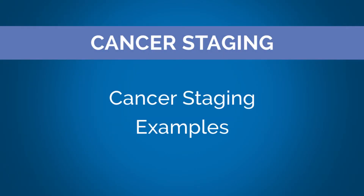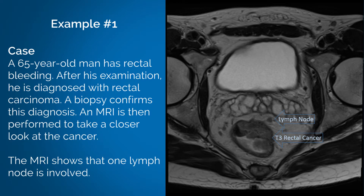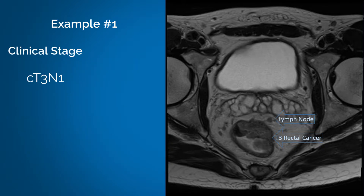Cancer staging examples. A 65-year-old man has rectal bleeding. After his examination, he is diagnosed with rectal carcinoma. A biopsy confirms this diagnosis. An MRI is then performed to take a closer look at the cancer, and the MRI shows that one lymph node is involved. The clinical stage for this cancer is cT3N1.